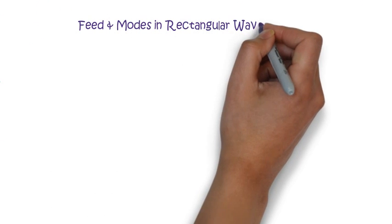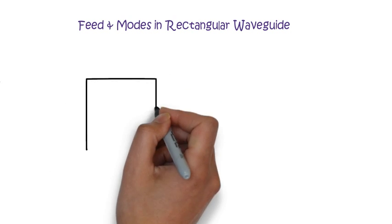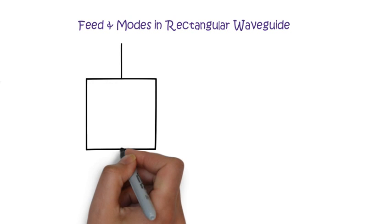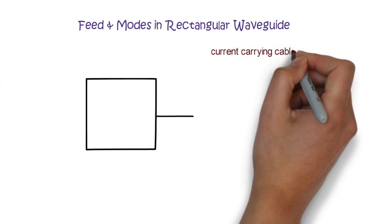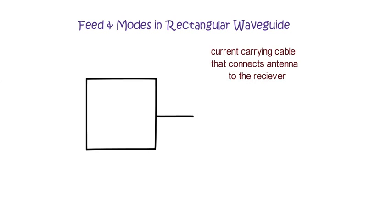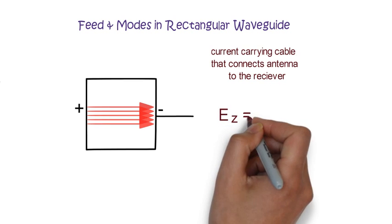Now let's see the feed mechanism in a rectangular waveguide. Here we have the cross section of a rectangular waveguide. If we apply a horizontal or a vertical feed it will always give the suitable electric field in a direction perpendicular to the wave propagation. Feed line here is nothing but a cable or transmission line that connects antenna to the receiver. So horizontal and vertical feed always give the electric field only in x y plane and electric field in z direction will be zero.